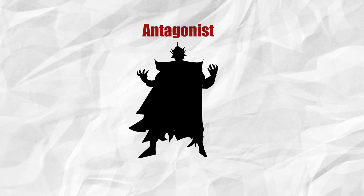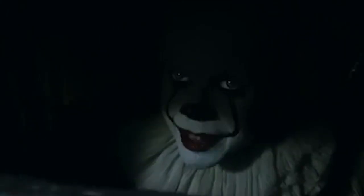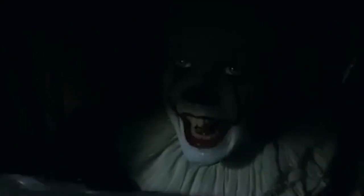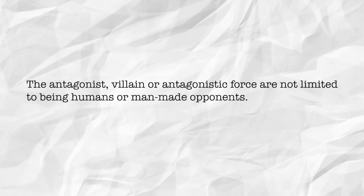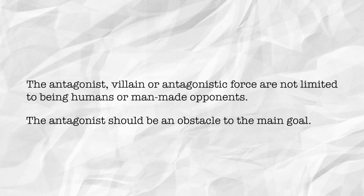Now, the villain doesn't always have to be a human. You can look at any horror movie and pretty much figure that out. But besides a monster, it could be a place, it could be a demon, it could be an animal — think Jaws, Cujo, The Birds, anything like that. Regardless of who or what your antagonistic force is, one thing you need to make clear inside your logline is that the antagonistic force is an obstacle to the major goal.